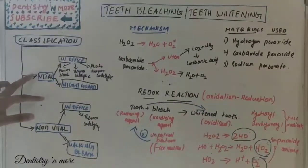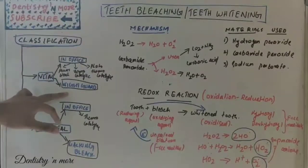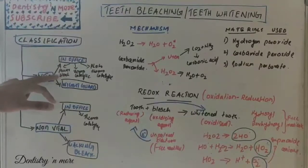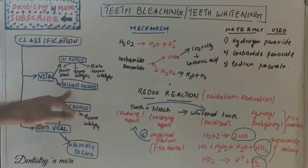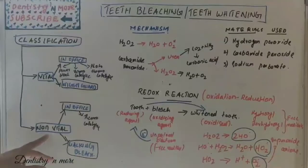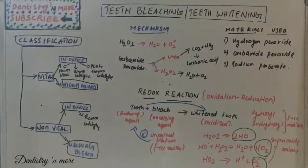First, let's jump to the classification of teeth bleaching. The process can be done on vital and non-vital teeth. It can be performed professionally at the dental office or at home by the patient. In-office bleaching includes power bleach, thermocatalytic bleach, and photo-thermocatalytic bleach. Home bleaching includes night guard bleaching, which falls under vital bleaching. Non-vital bleaching done professionally includes thermocatalytic bleaching and walking bleach.